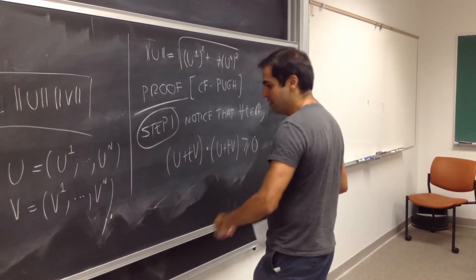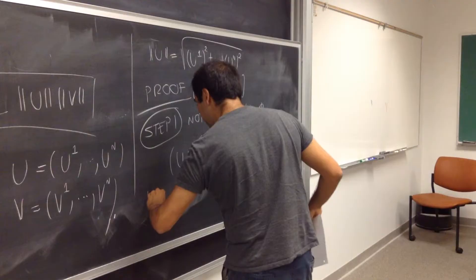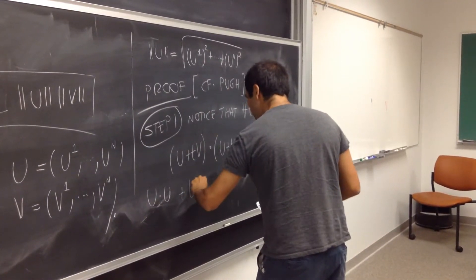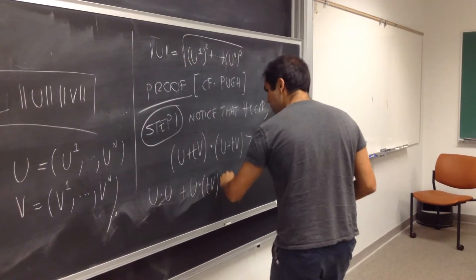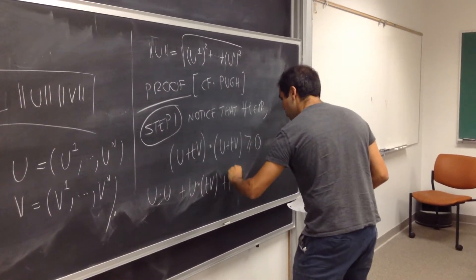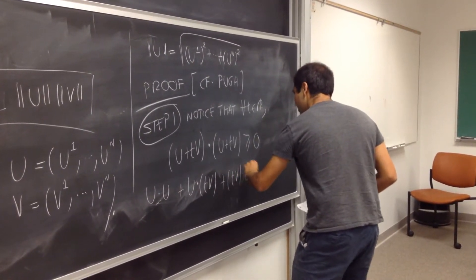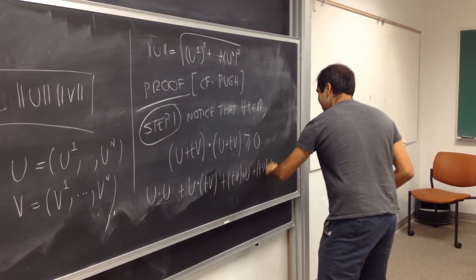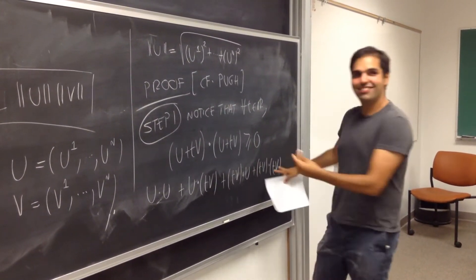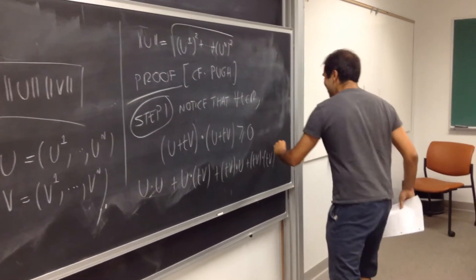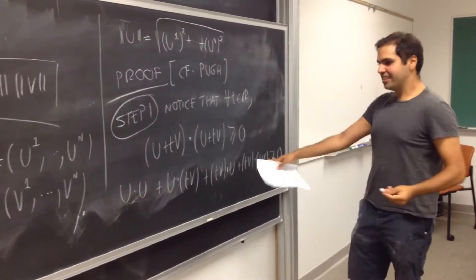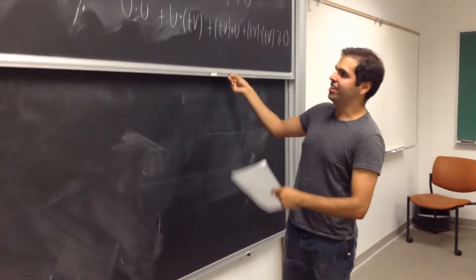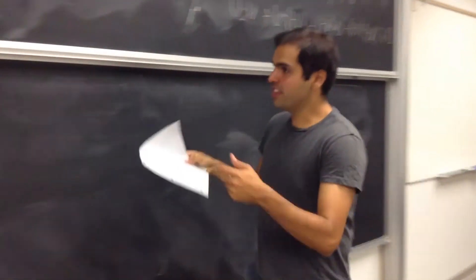So if you foil it out using the properties of dot products, you get u dot u plus u dot tv plus tv dot u plus tv dot tv. It's better than watching TV. You get that this is greater or equal to zero. And then, just for review,